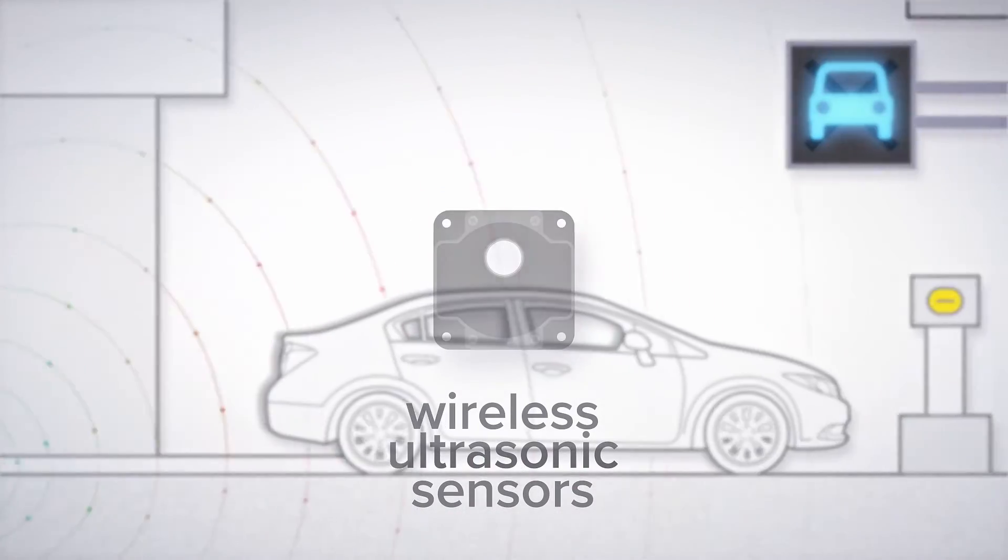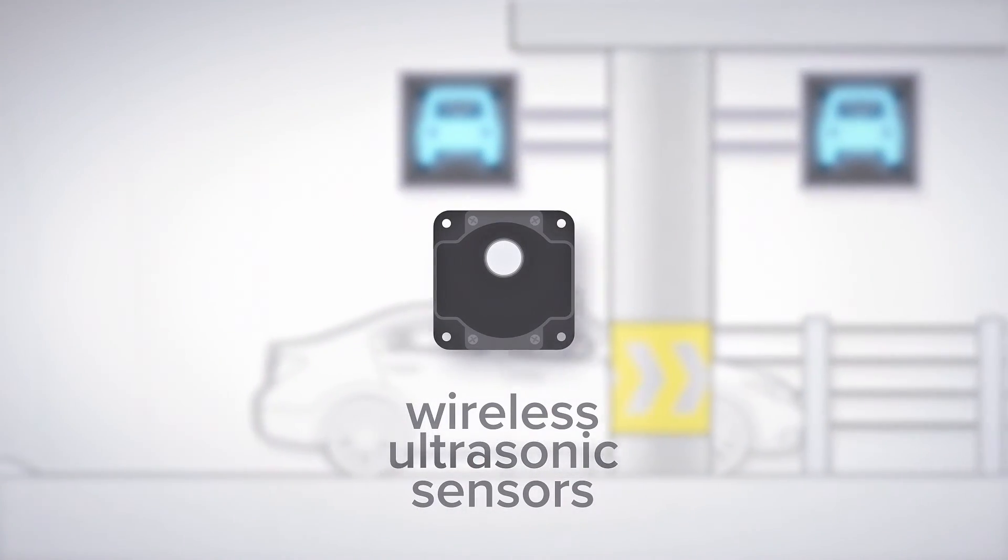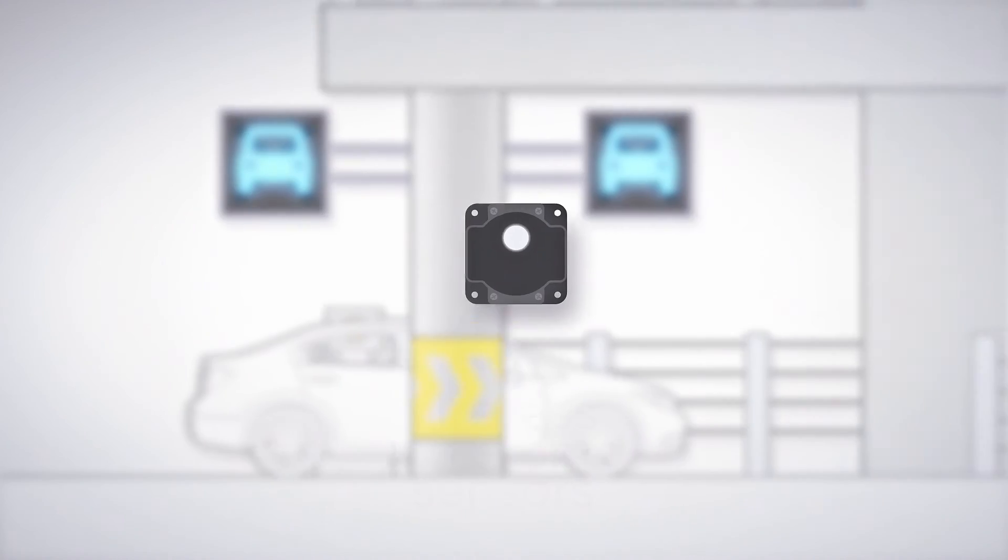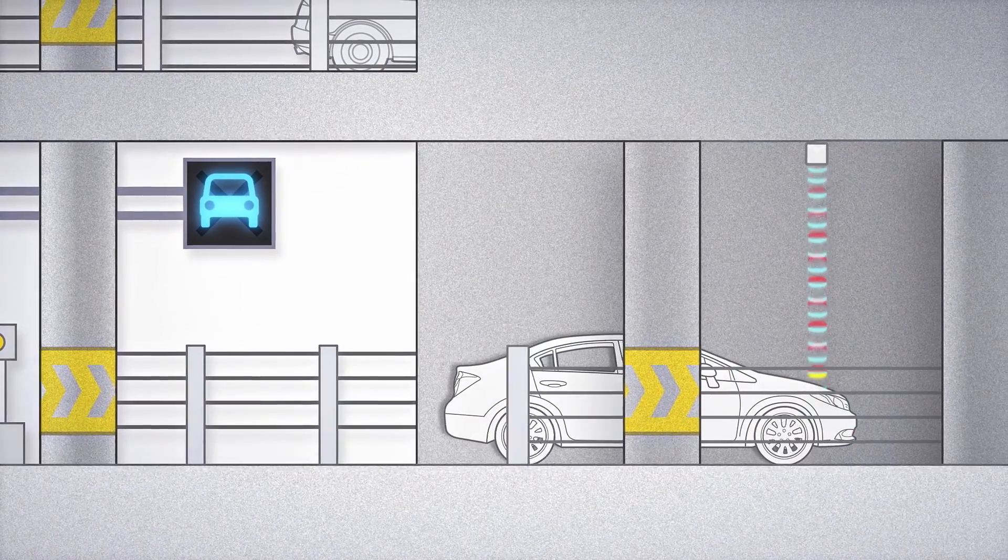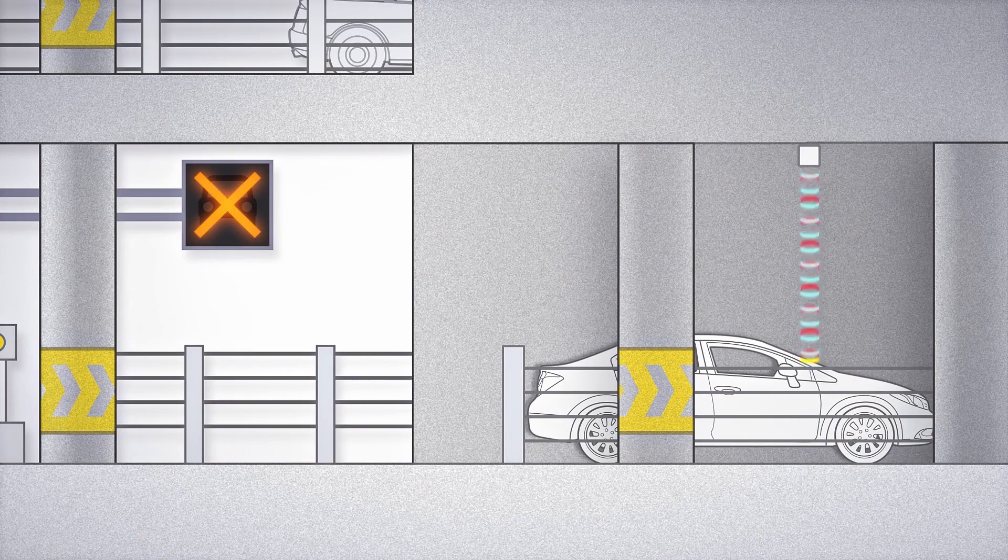Wireless ultrasonic sensors are another easy install option. They use sound waves to detect vehicles of any size, shape, or reflectivity. Here, they are mounted over covered parking stalls to identify when a parking ramp is full.